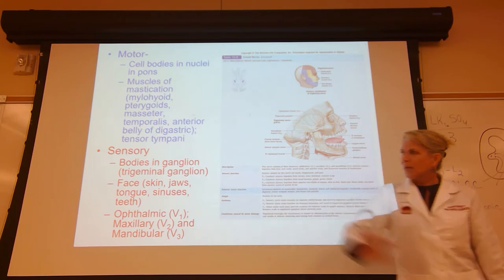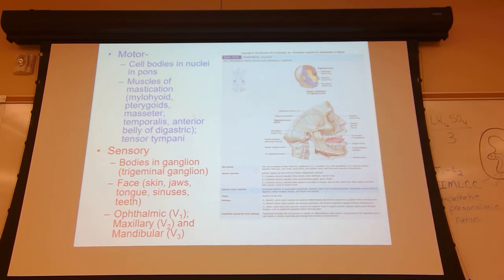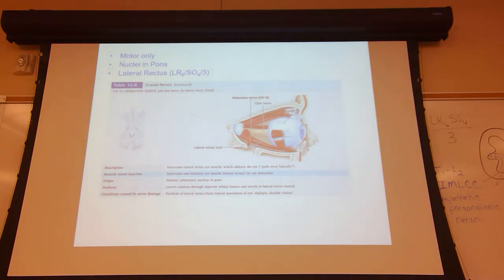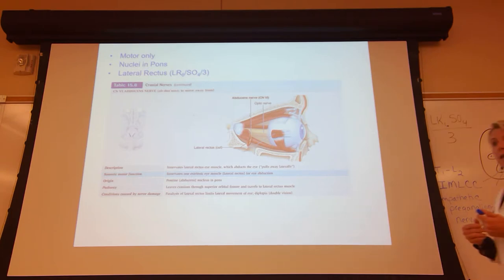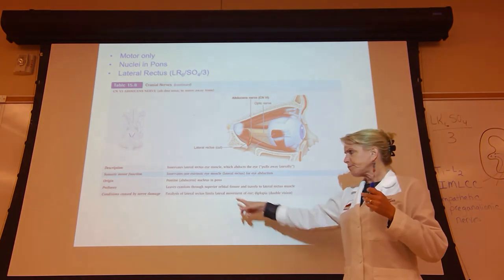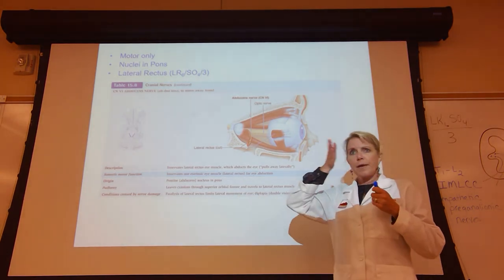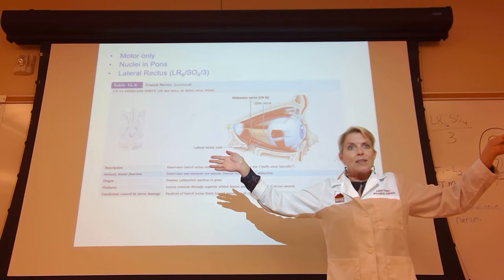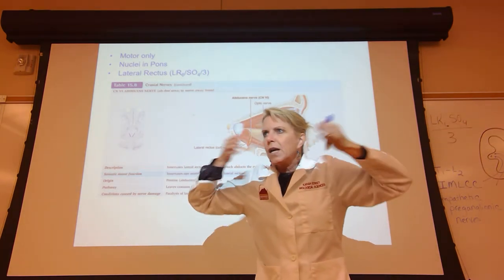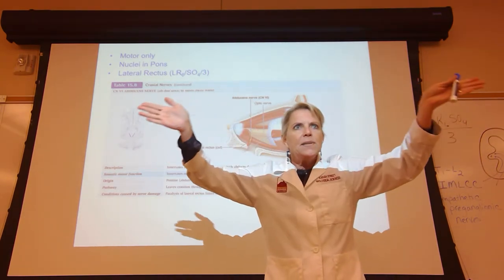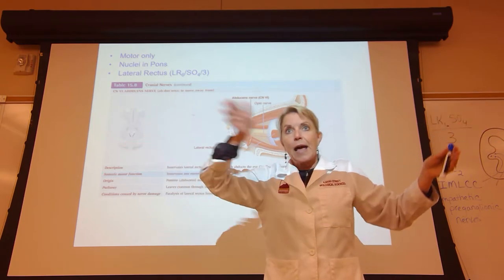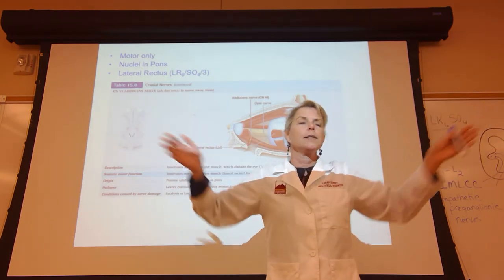Cranial nerve VI is the abducens nerve — motor only. It targets your lateral rectus muscle only. Lateral rectus causes abduction of the eye. If the abducens nerve is damaged, you will have a problem moving your eye laterally.